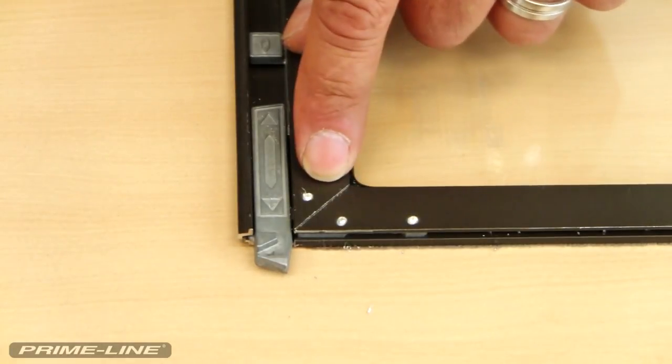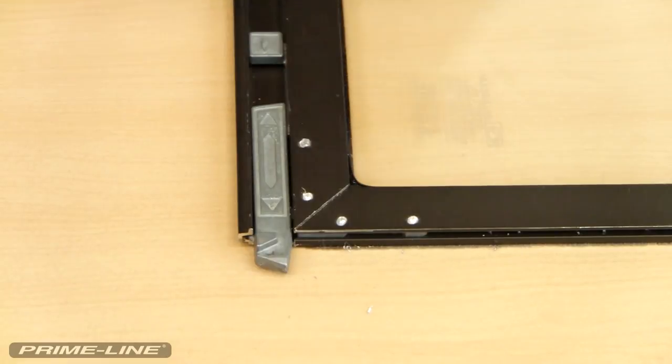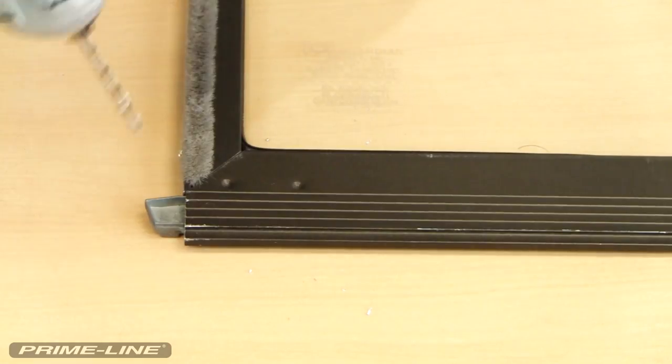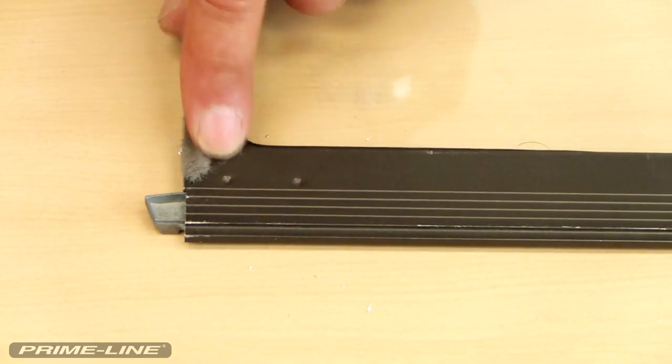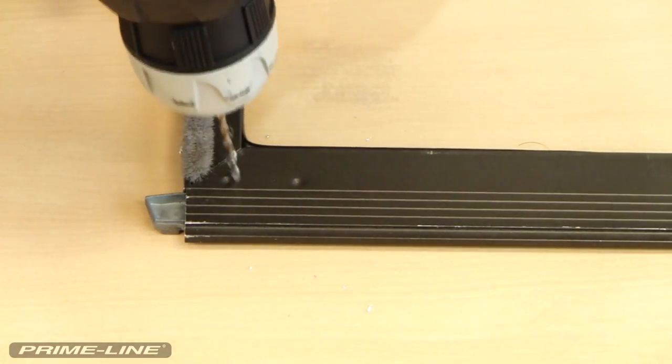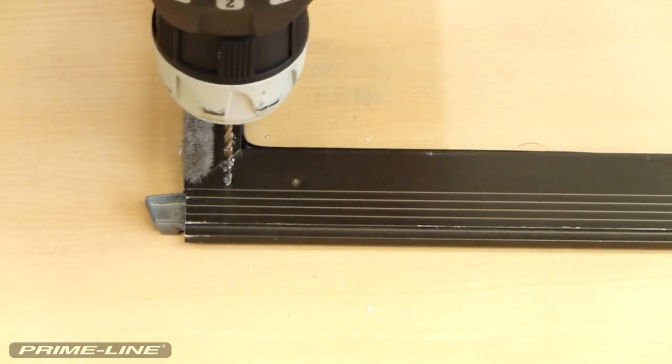Now that we've drilled out the indentations I'm going to flip this over and do the same on the opposite side. This side only has two indentations, this leg does not have any so I just got to drill those out and we'll be ready to separate this.